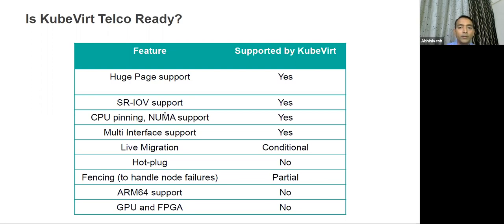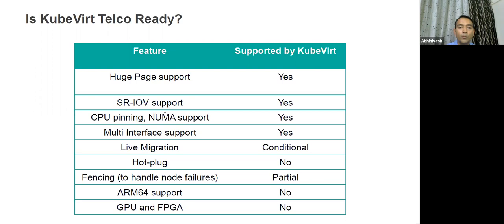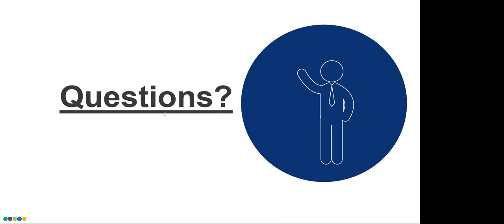Now moving to questions. Robson asks: why does MEC require both VNF and CNF? Could you provide examples to clarify?